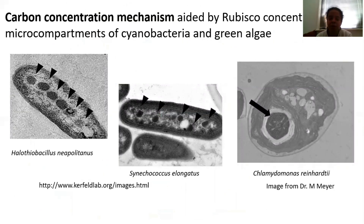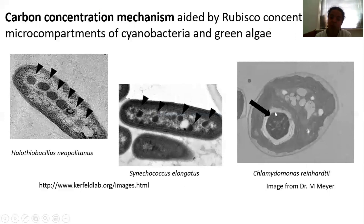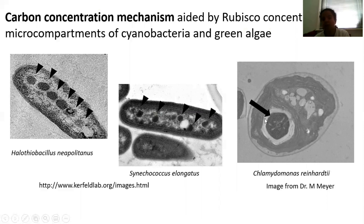So where does this happen in microbes? Here I have examples from cyanobacteria — two cyanobacterial species — and the green alga Chlamydomonas reinhardtii. In the first two images from Halothiobacillus and Synechococcus, there are spheroid dark structures which are actually micro-compartments where Rubisco is kept concentrated, and it is into these compartments that carbon dioxide has to be delivered for fixation. In the case of the green alga Chlamydomonas, which is the model system I study in my lab, the micro-compartment is called the pyrenoid, which is within an organelle called the chloroplast where all of the photosynthesis reactions take place. It is in the pyrenoid that Rubisco is kept concentrated and it is here that carbon dioxide needs to be delivered.